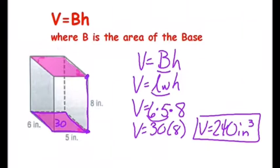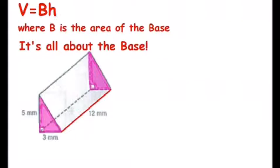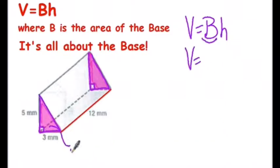Always look for the base. For this last one, we have a triangular prism. So we do have congruent parallel bases, but this time they're in the shape of a triangle. So when we replace the B, which stands for area of the base, we replace it with ½bh, the area of a triangle.